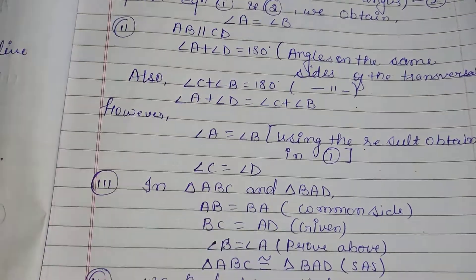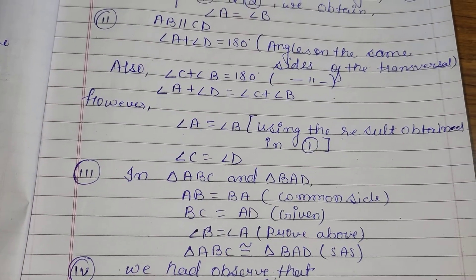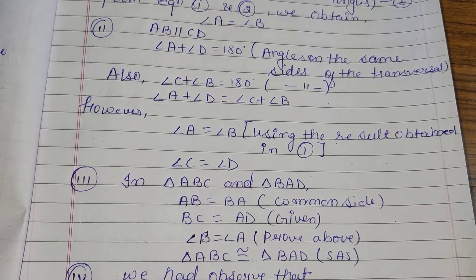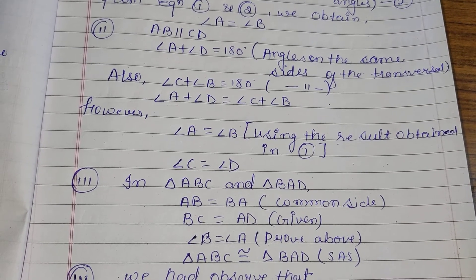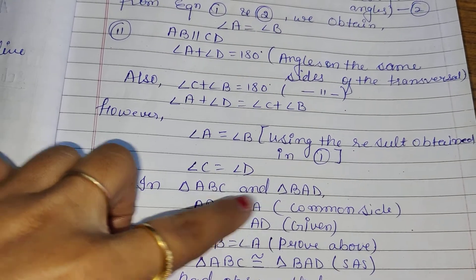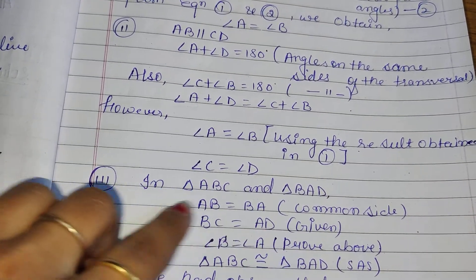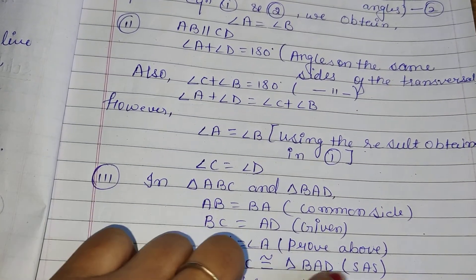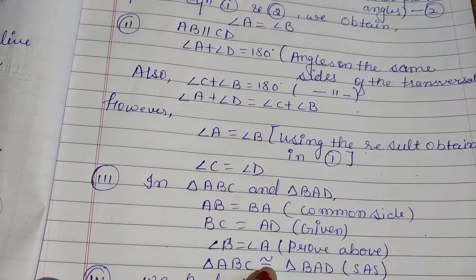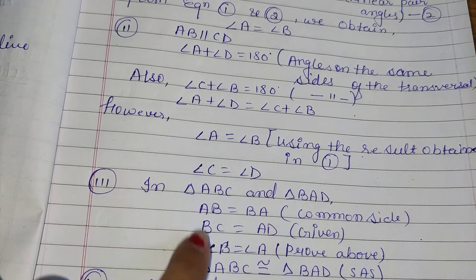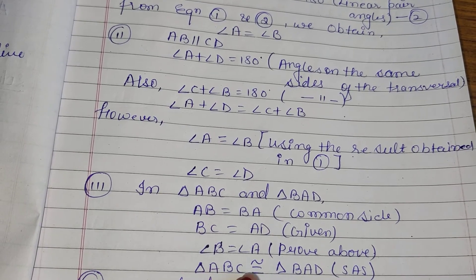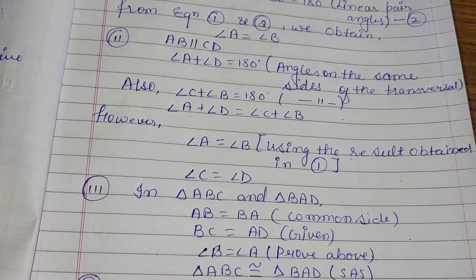Similarly, we can also write that angle C is equal to angle D. In the third part, we have to prove triangle ABC congruent to triangle BAD. In triangle ABC and triangle BAD: AB equals BA (common side), AD equals BC (given), and we proved above that angle B equals angle A. By Side-Angle-Side criteria, triangle ABC is congruent to triangle BAD.